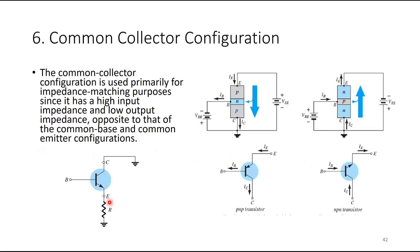Done with common emitter configuration. Now we look at common collector configuration, which will be brief. Common collector configuration is used primarily for impedance matching purposes. It has high input impedance and low output impedance — opposite to common base and common emitter configurations. If your amplifier output has high impedance but the next circuit has low input impedance, a common collector stage in between can match those impedances.